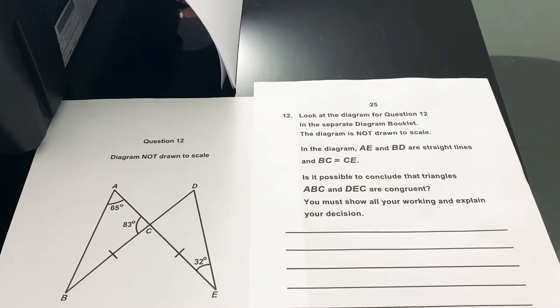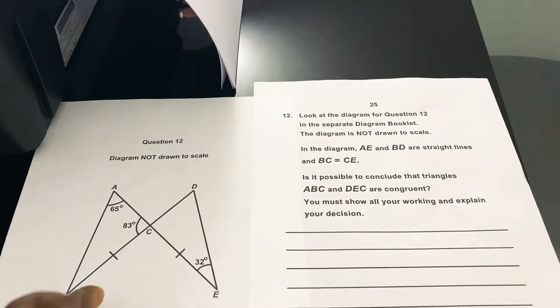Question 12 says look at the diagram in the separate diagram booklet. The diagram is not drawn to scale. In the diagram, AE is equal to BD.